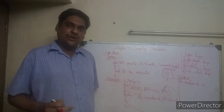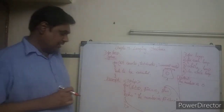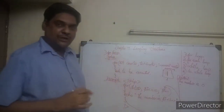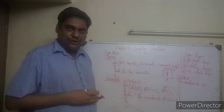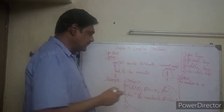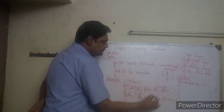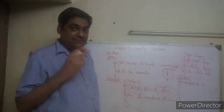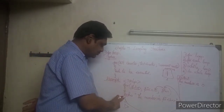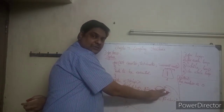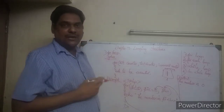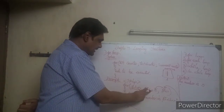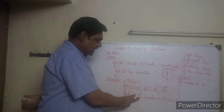After increment, `i` becomes 1. The computer goes back to the test counter and checks again. Is 1 less than or equal to 10? True or false? True. That means it will again come inside the loop.